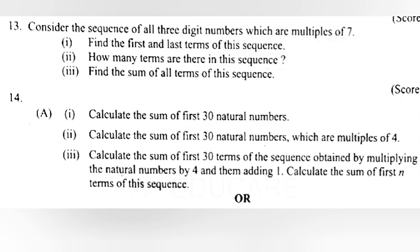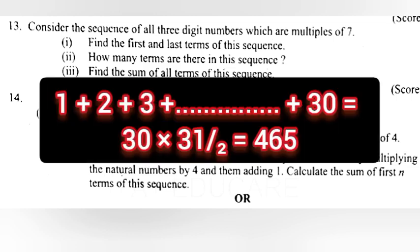14a. 1. Calculate the sum of first 30 natural numbers. Answer: 1 plus 2 plus etc plus 30 equal 30 into 31 divided by 2 equal 465.